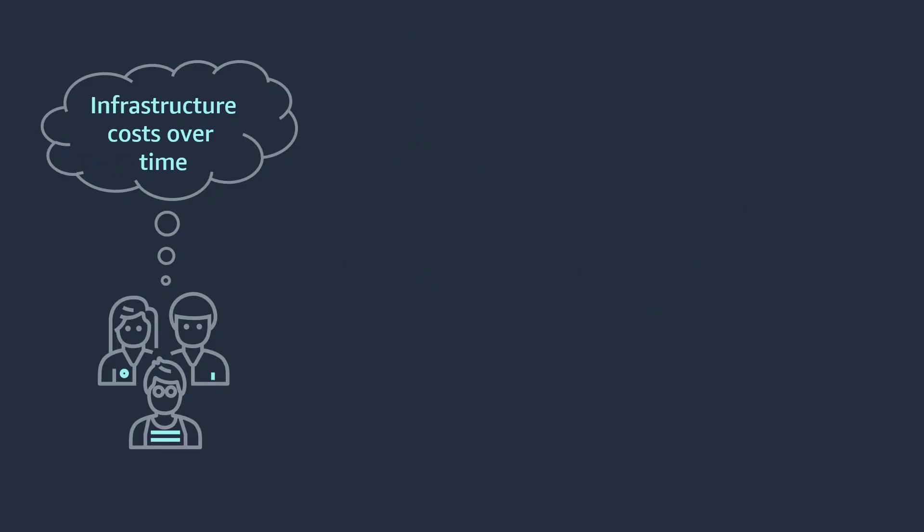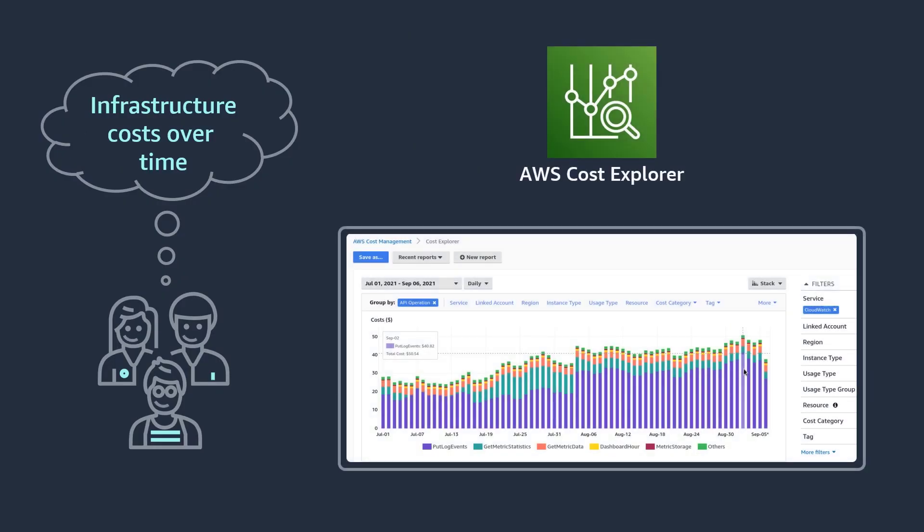Even when optimizing your infrastructure automatically, you may want your team to look at infrastructure costs and make their own assessments. They can do that with AWS Cost Explorer. You can use AWS Cost Explorer to visualize expenses over time to gain a deeper understanding of your business's trends as they happen.